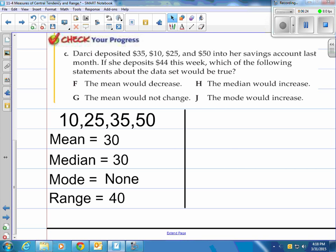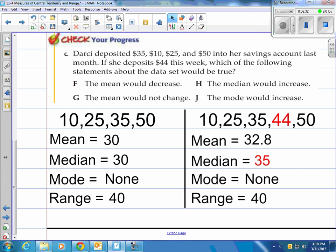All right, let's look at our first data set without the $44 in it. I've calculated the mean, median, mode, and range. Then you go ahead and calculate with the $44 in the data set, and notice the mean goes to 32.8. That increased. The median increased to 35. Mode didn't change and the range didn't change. So you can look at the answers there.